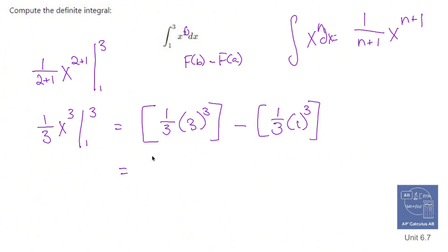So it's just a little bit of math now, which is what this is. 1 third times 27, minus 1 third times 1, 9 minus 1 third is going to equal 8 and 2 thirds. Fun stuff.